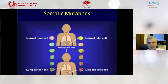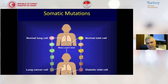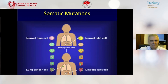So what does that mean? A somatic mutation means, for example, a normal lung cell can be mutated, so that a lung cancer cell can be produced. For example, a normal islet cell in our pancreas — if there is a mutation in the cell, a diabetic islet cell can be produced.